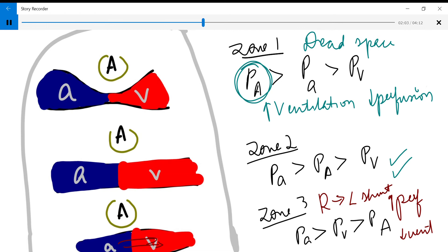In zone 1 the VQ ratio is going to be 3 and in zone 3 it's going to be 0.6.